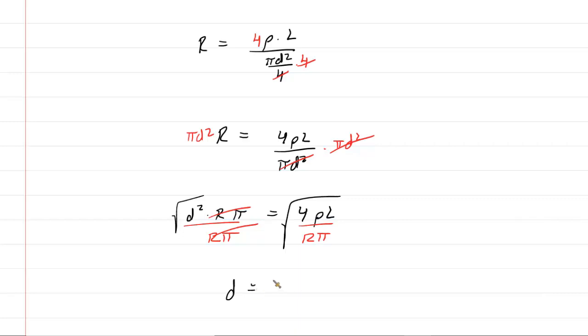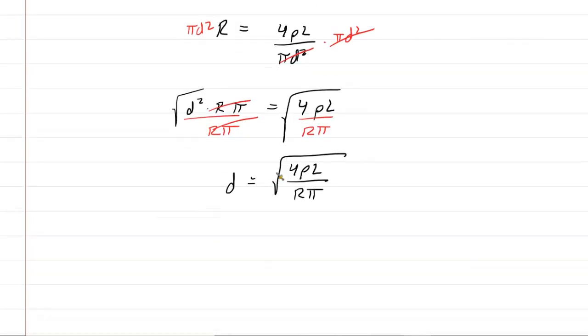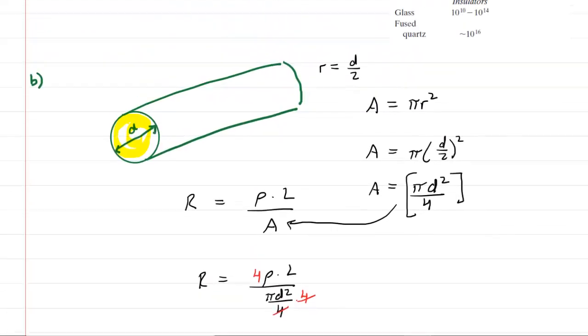So now we can see that d is equal to the square root of 4 rho L over the resistance times pi. Kind of a strange result, but that is indeed correct. We do have to look up the resistivity of copper. It's going to have a different value.